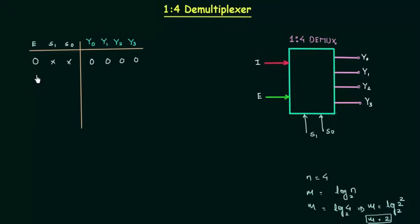When enable is 1, s1 is 0, s0 is 0 it means the input i is transferred to y0 so y0 is equal to i and y1, y2, y3 will remain 0. When enable is 1, s1 is 0, s0 is 1 then the input i is transferred to y1 so y0 will remain 0, y1 is now i, y2 is 0, y3 is 0. In the same way we can complete the table.